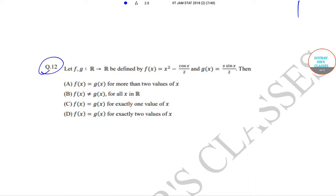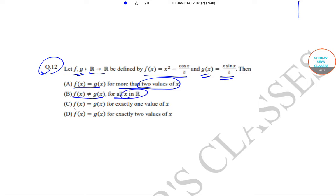In question number 12, it has been given that let f and g be two functions from R to R, defined by f(x) = x² - cos(x/2) and g(x) = x·sin(x/2). The options are: f(x) = g(x) for more than two values of x; f(x) ≠ g(x) for all x in R; f(x) = g(x) for exactly one value of x; and f(x) = g(x) for exactly two values of x.